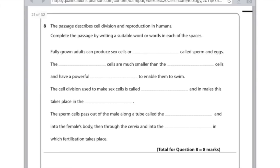Eight, the passage describes cell division and reproduction in humans. Complete the passage by writing a suitable word or words in each of the spaces. Fully grown adults can produce sex cells or gametes as they're otherwise known, called sperm and eggs. The sperm cells are much smaller than the egg cells and have powerful tails to enable them to swim. The cell division used to make sex cells is called meiosis and in males this takes place in the testes or the testicles. The sperm cells pass out of the male along a tube called the urethra and into the female's body, then through the cervix and into the oviduct in which fertilisation takes place. If you didn't want to say oviduct you could say fallopian tube there.